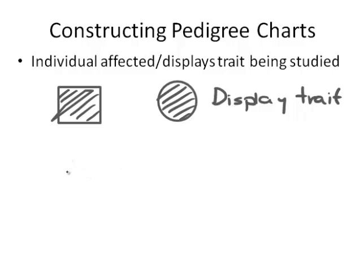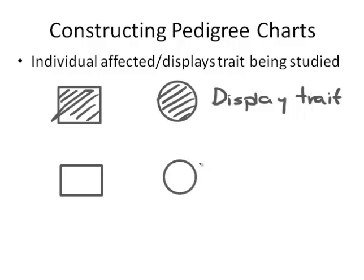Individuals who are not affected — males are shown as an uncoloured square and females as an uncoloured circle. They don't display the trait.